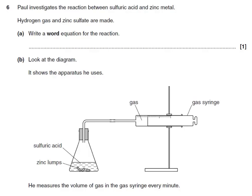Here's a past paper question. Paul investigates the reaction between sulfuric acid and zinc metal. Hydrogen gas and zinc sulfate are made. Write a word equation for this reaction. The reactants are the sulfuric acid and the zinc — we won't bother writing 'metal', because that's not a chemical name.